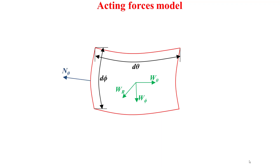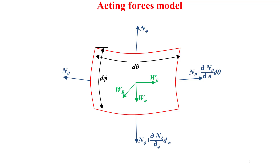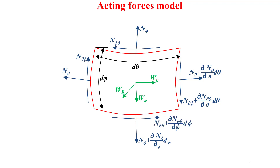For the membrane forces we have N theta applied as depicted in this slide, and on the other side N theta plus the variation of N theta along the latitude direction. We have N phi, and on the other side N phi plus the variation of N phi along the longitude direction. We have the first twisting membrane force N theta phi, and on the other side N theta phi plus its variation along the latitude direction. We have the second twisting membrane force N phi theta, and on the other side N phi theta plus its variation along the longitude direction.